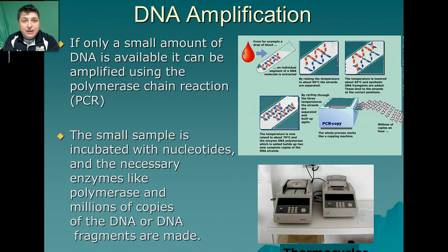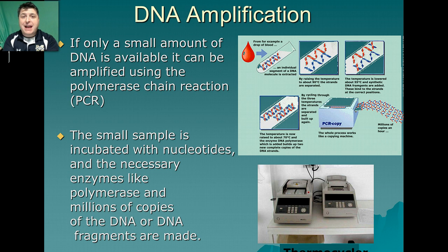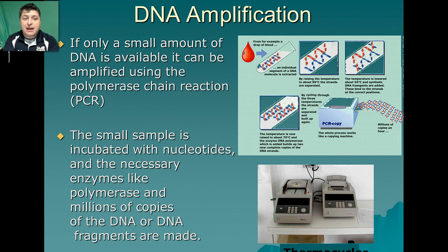Sometimes, especially at crime scenes, you're only going to get a small amount of DNA. If we have a few skin cells on a cigarette butt, we're only going to have a small amount of that DNA. In order to analyze it, we're going to need to amplify it — make lots and lots of copies. The process we use to take a small amount of DNA and get enough to analyze is called polymerase chain reaction, or PCR.